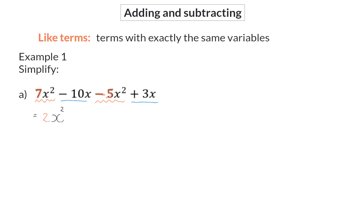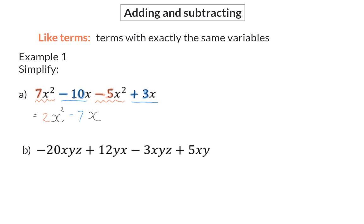Now I want to determine how many x terms we have, and for that I look at the coefficients of the x terms. So I take minus 10 and plus 3 and add them up. Minus 10 plus 3 is minus 7x. This is our final answer because these two terms are not like terms.